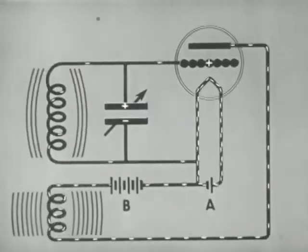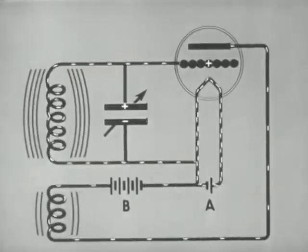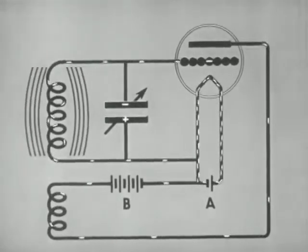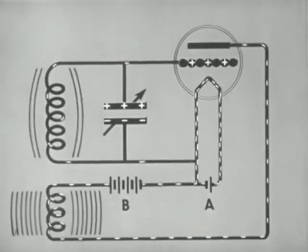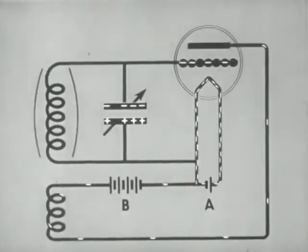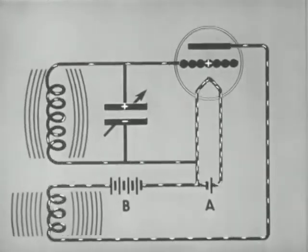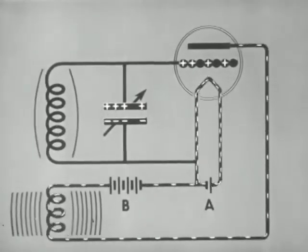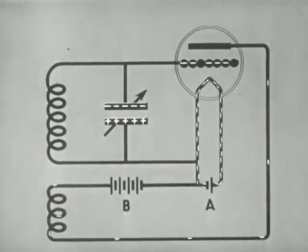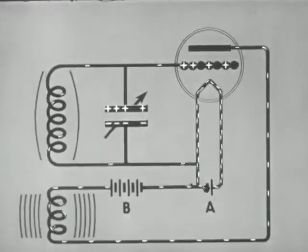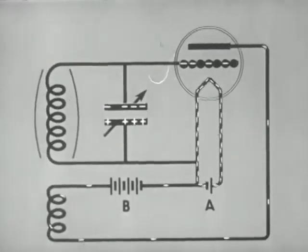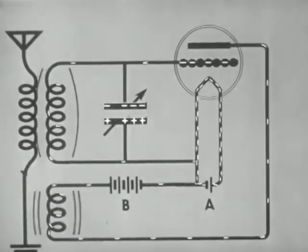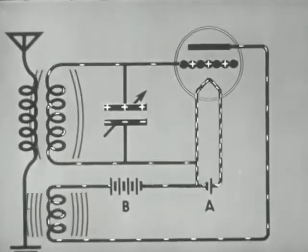The frequency at which the current alternates is determined by the resonant frequency of the grid circuit, which may be controlled by a variable condenser. The current may alternate millions of times per second. Direct current from the B battery is thus changed to a high frequency alternating current in the grid circuit. The grid circuit of such an oscillator may be coupled to an antenna in the sending station. Energy is transferred by induction from the grid circuit to the aerial-ground circuit, and electromagnetic waves are radiated out into space.